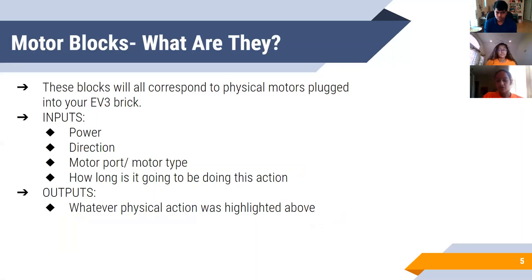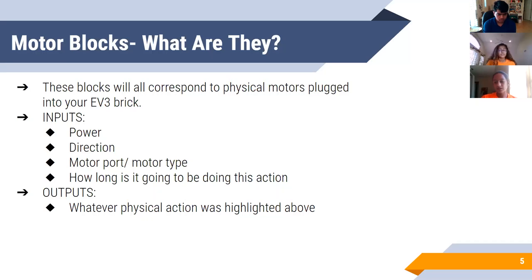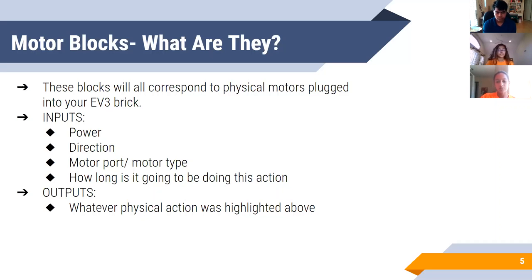The first category of EV3 programming blocks we're going to cover are called motor blocks. These correspond to physical motors plugged into your EV3 brick. The different inputs you can customize for each block include: power, which controls the speed; direction, which controls which direction your robot moves; motor port and motor type — each motor plugs into a specific port on your robot brain, so you have to specify which port that block is controlling. Finally, you specify how long your robot will be performing the action, and the output is whatever physical action you've configured.